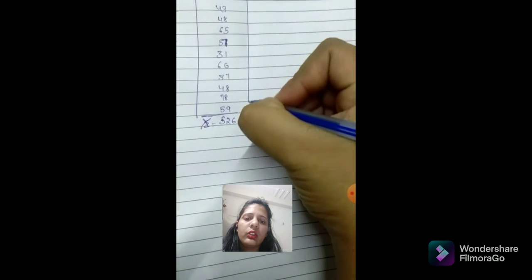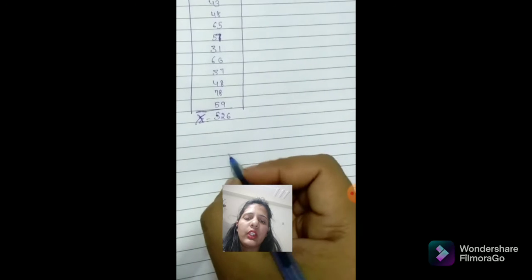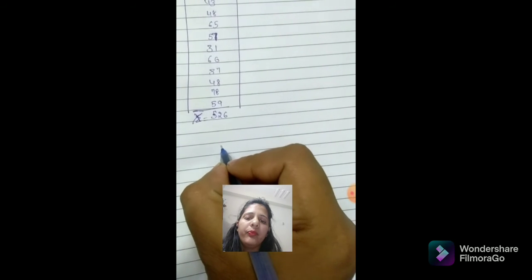x̄ is 526 divided by n, and our n is the number in sequence, the number of frequency, which is 10. So 526 by 10 is 52.6.